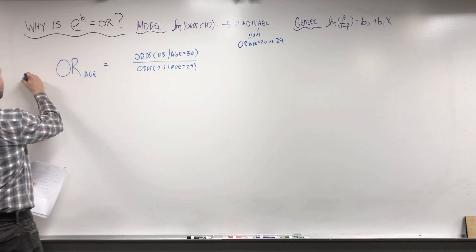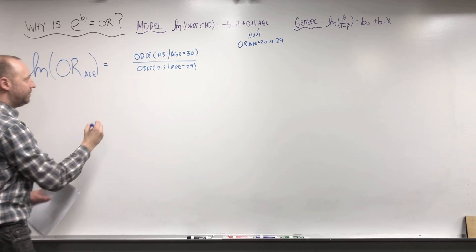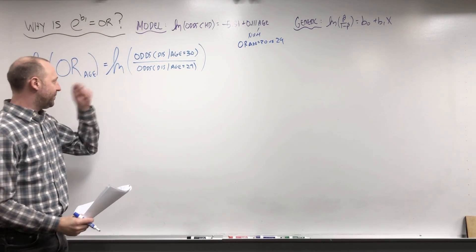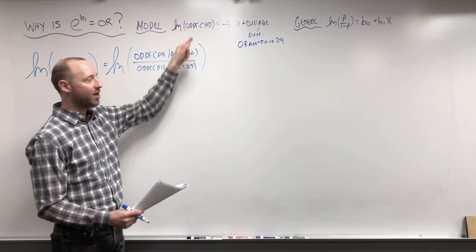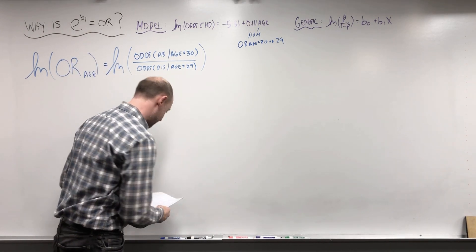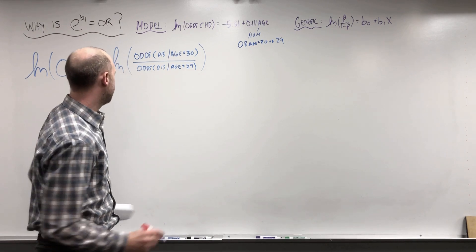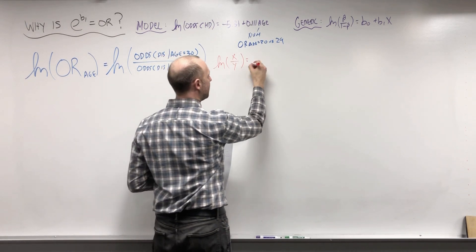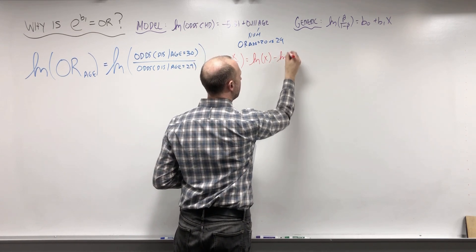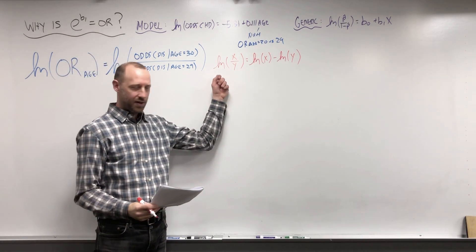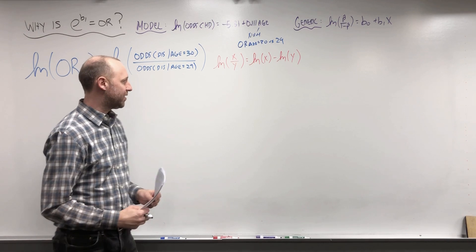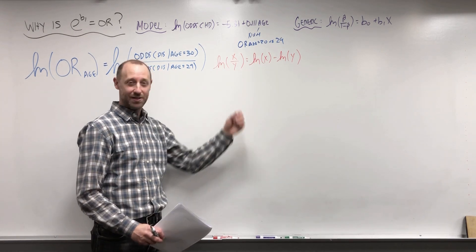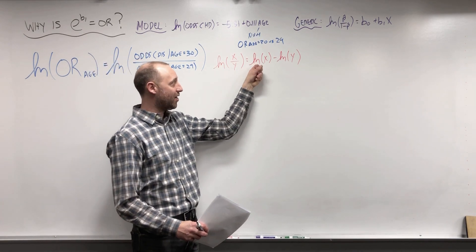What I'm going to do is work on the scale of the log odds ratio, taking the log of both sides. The reason I'm doing that is logistic regression models the log of the odds. There's one property of logs we need to make use of: the log of x over y can be written as the log of x minus the log of y. You might have to reach back to undergraduate or even high school math to recall that.